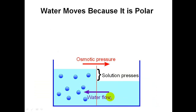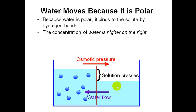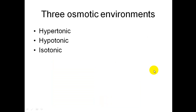Water moves because it is polar. Because water is polar, it binds to the solute by hydrogen bonds. The concentration of water is therefore higher on the right side of the tank, and water flows across the membrane down its concentration gradient to the left side.